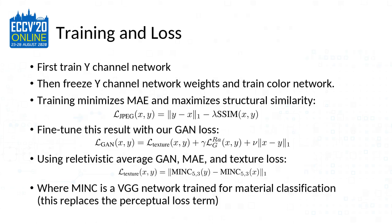For training and loss, we minimize mean absolute error and maximize structural similarity, which is a common metric for JPEG artifact correction. Once that's done, we fine-tune with our GAN loss using a relativistic average GAN, keeping the MAE term to prevent the network from diverging too far from the regression result. We also include a texture loss — a VGG trained on the Minc material classification dataset — which replaces the traditional perceptual loss term.